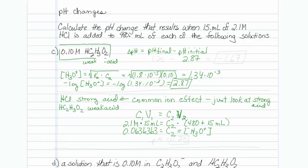And of course, if I take the log of 0.0636363, I will get a pH equal to 1.20. So that is my final pH. So 1.20 minus 2.87 should give me a minus 1.67.